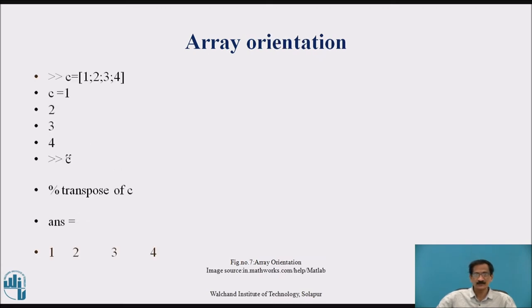Array orientation: if you type a command C is equal to into the rectangular bracket 1 semicolon 2 semicolon 3 semicolon 4 will give a column matrix because by entering a semicolon between the two elements will move every element to the next row. Then transpose of C will convert a column matrix to a row matrix.